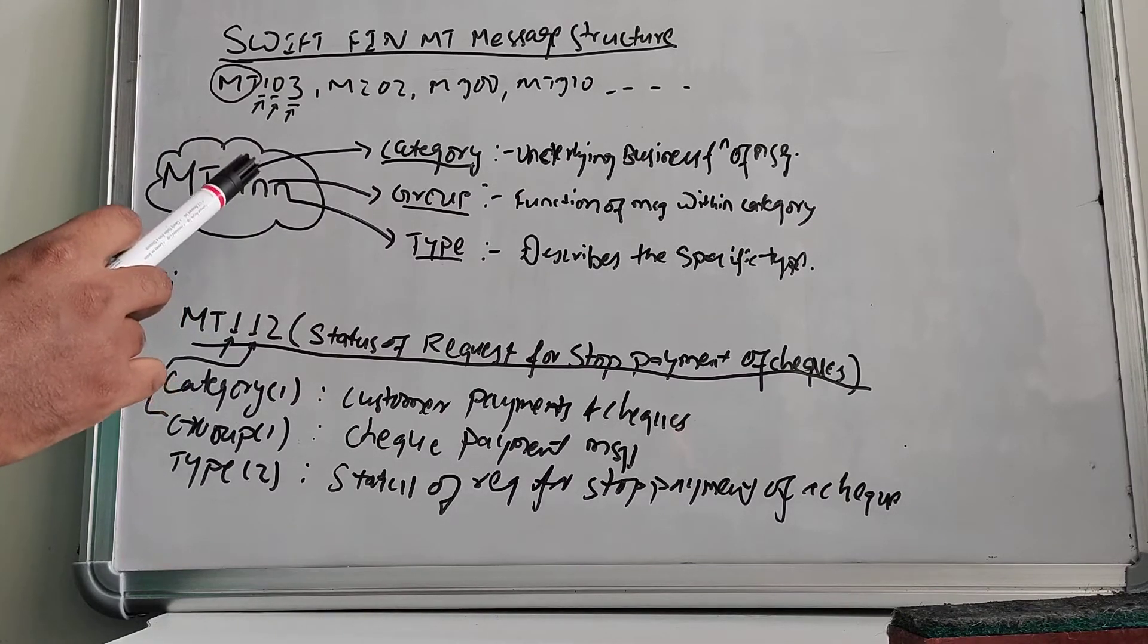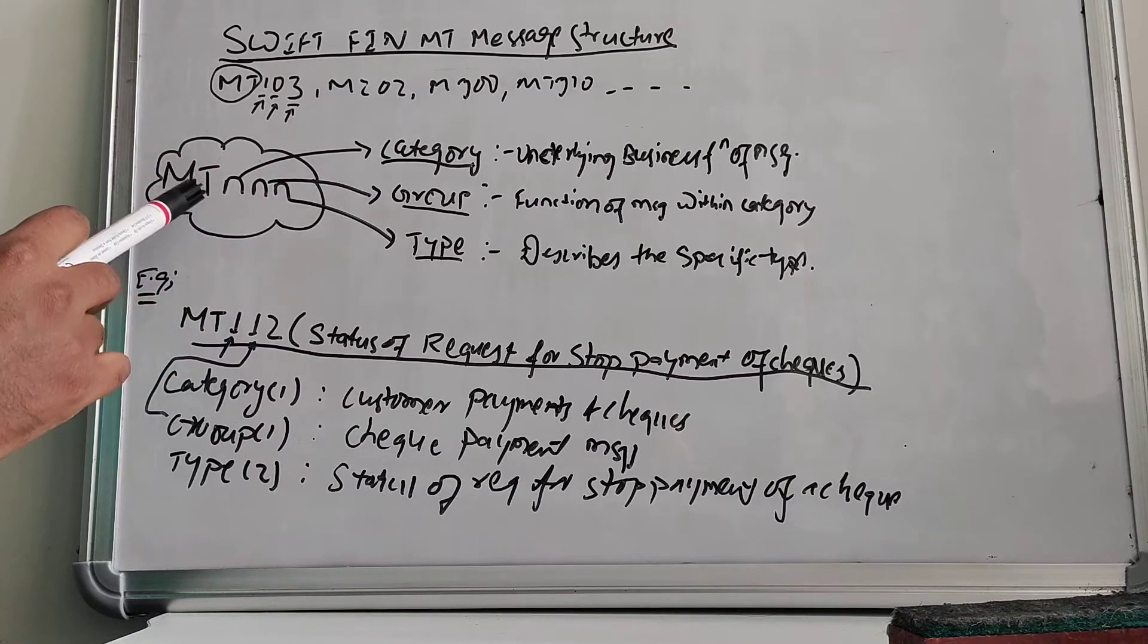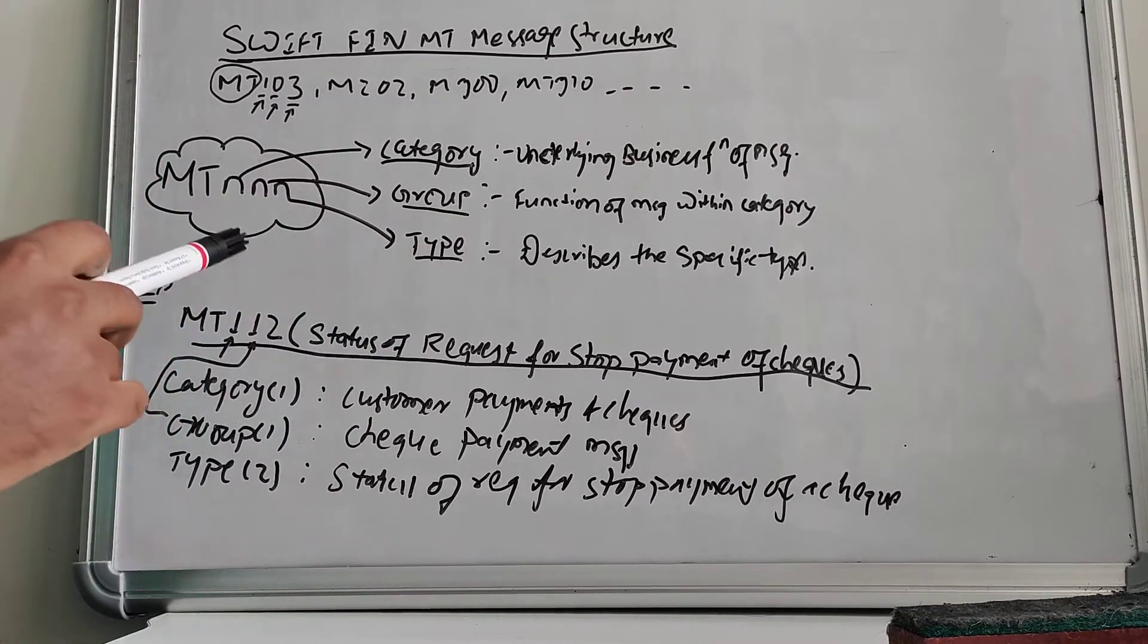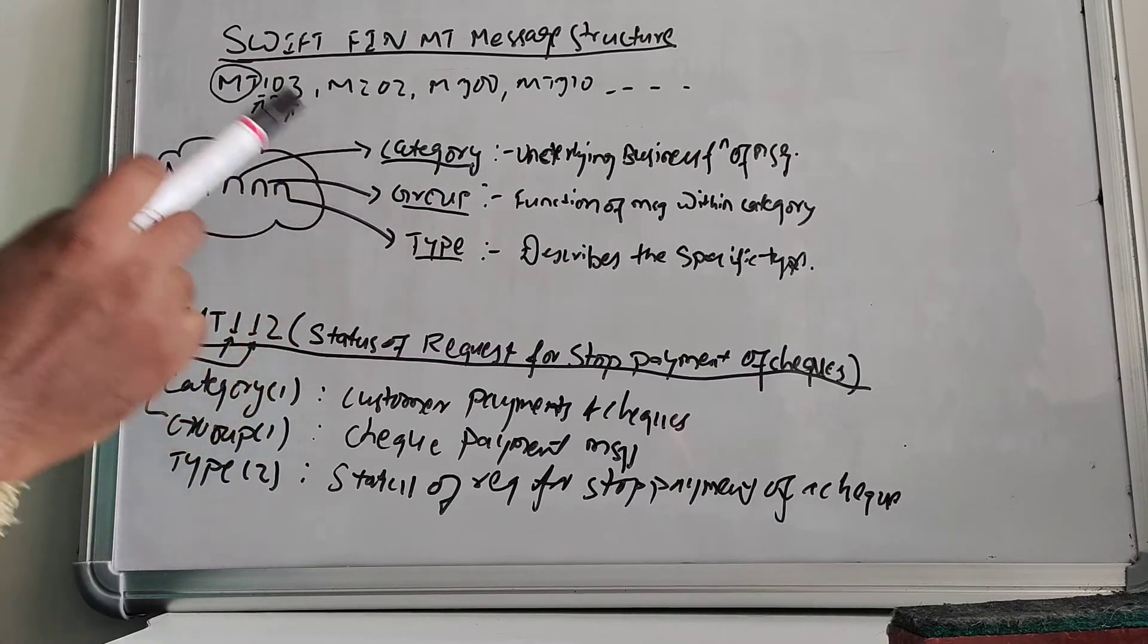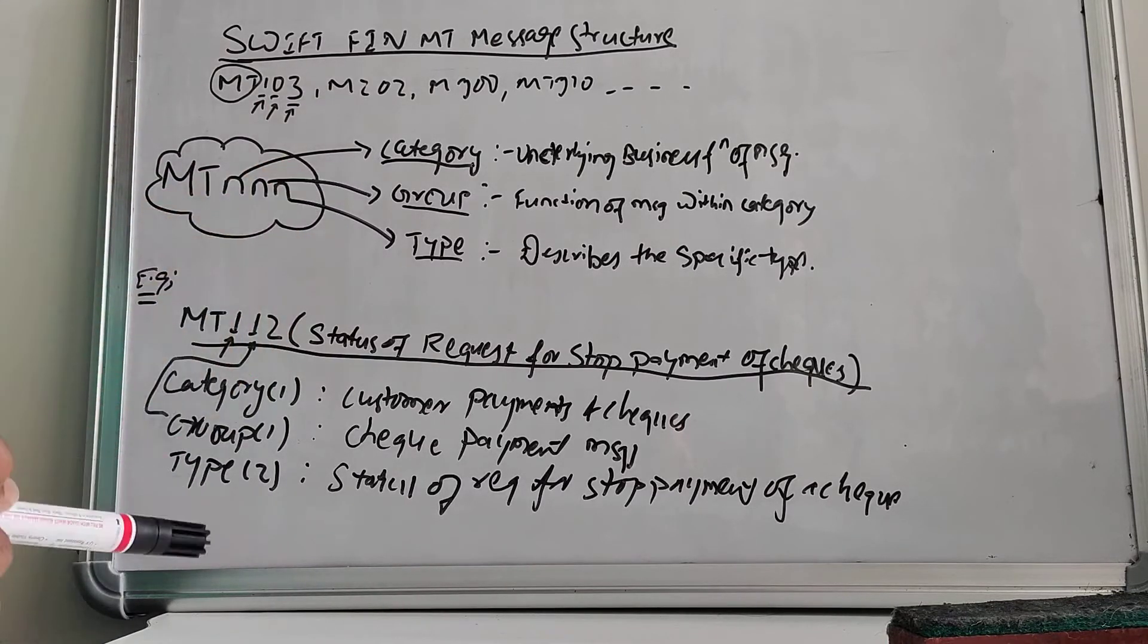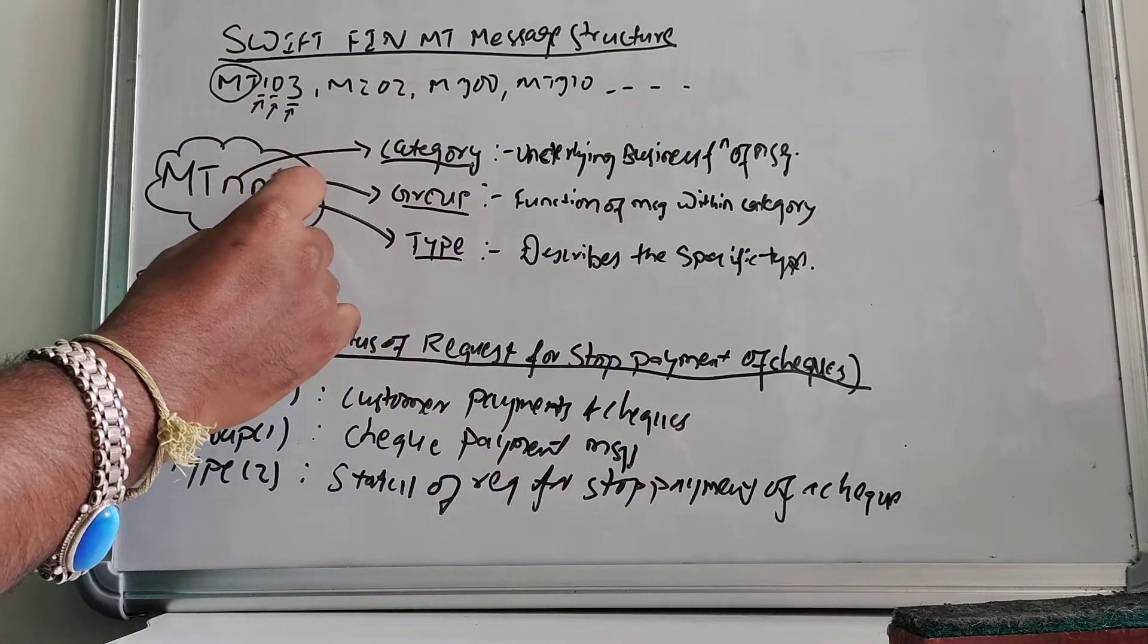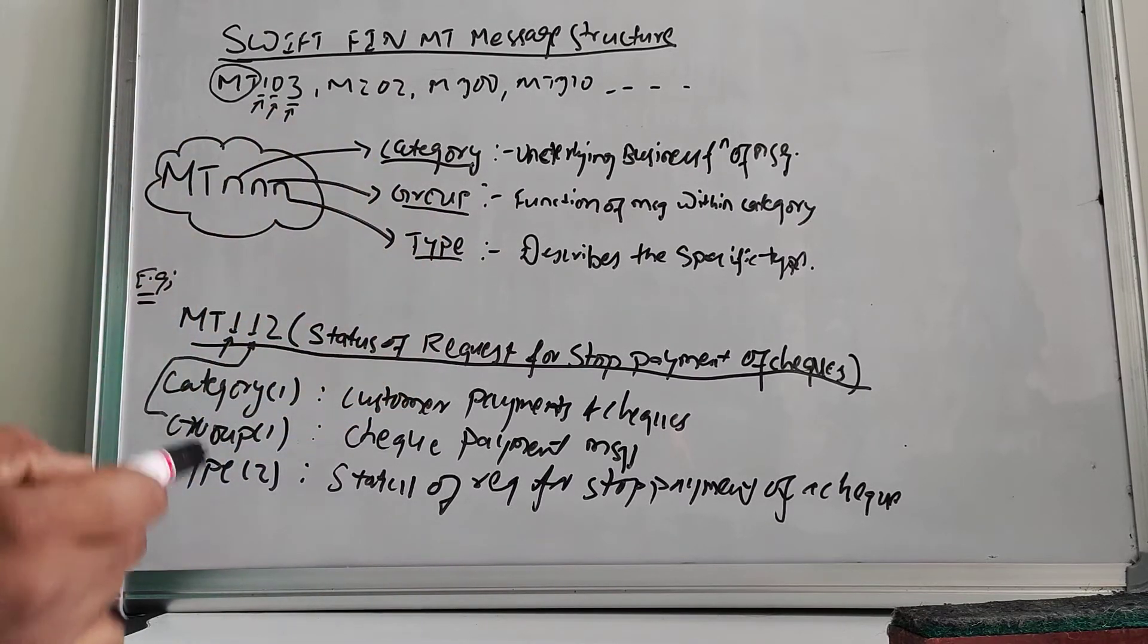Let's signify with triple N and understand all of those. The first N means the category. The category is the underlying business function of a message. The second N is the group. Group signifies the function of a message within the category. The third N means the type. It describes the specific type.